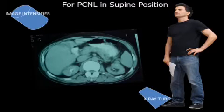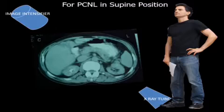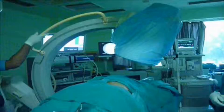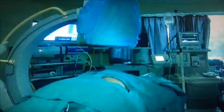In supine position, the X-ray tube will come closer to you, and this is the correct positioning. For prone PCNL, you should position the C-arm like this — tilted — and not in the vertical orientation.